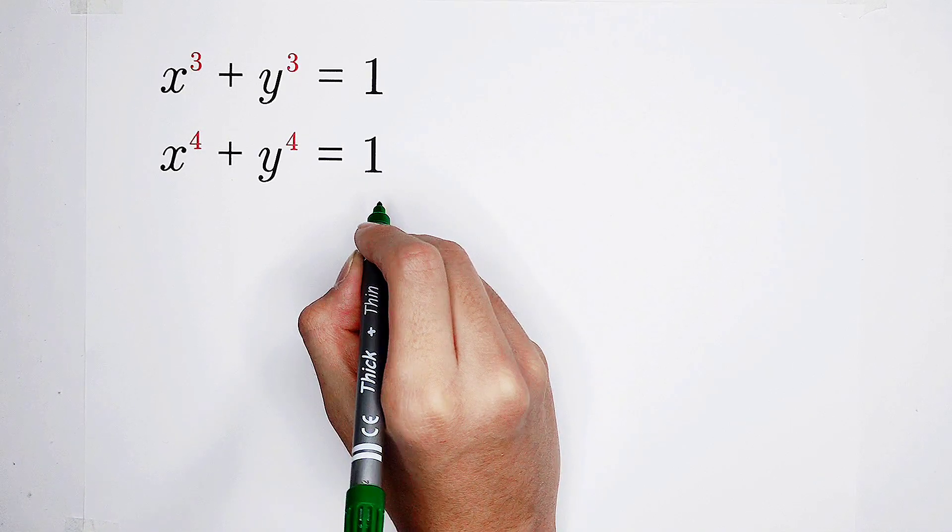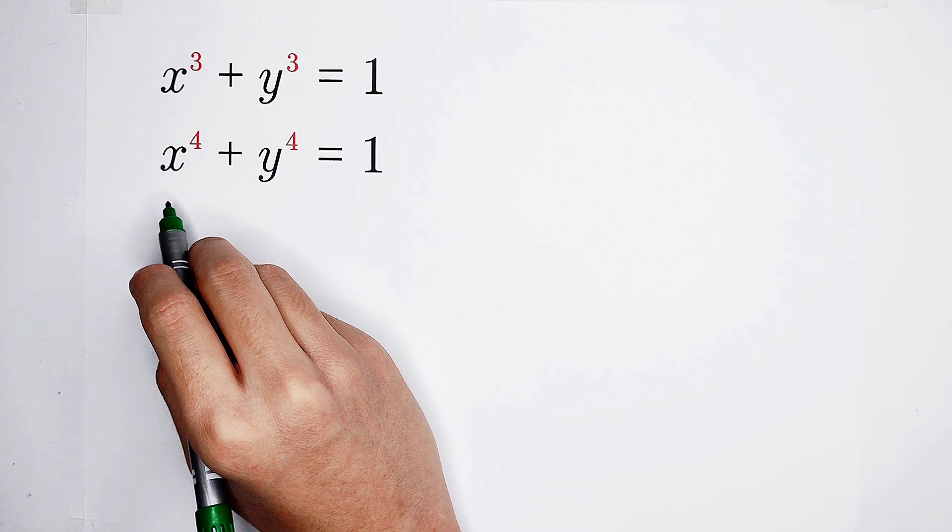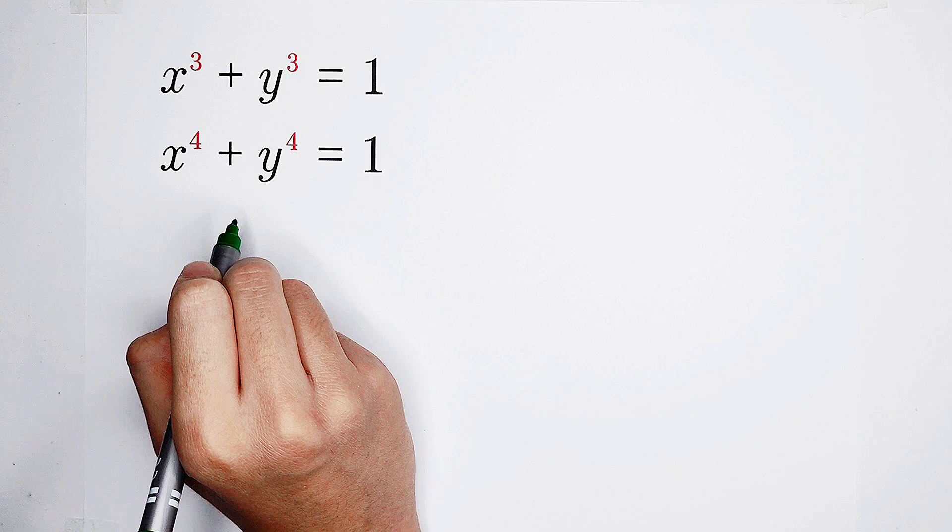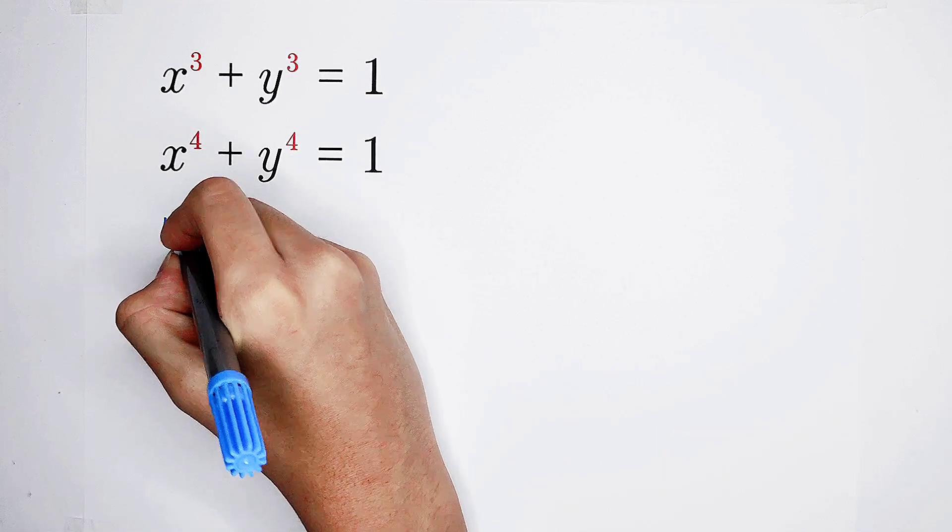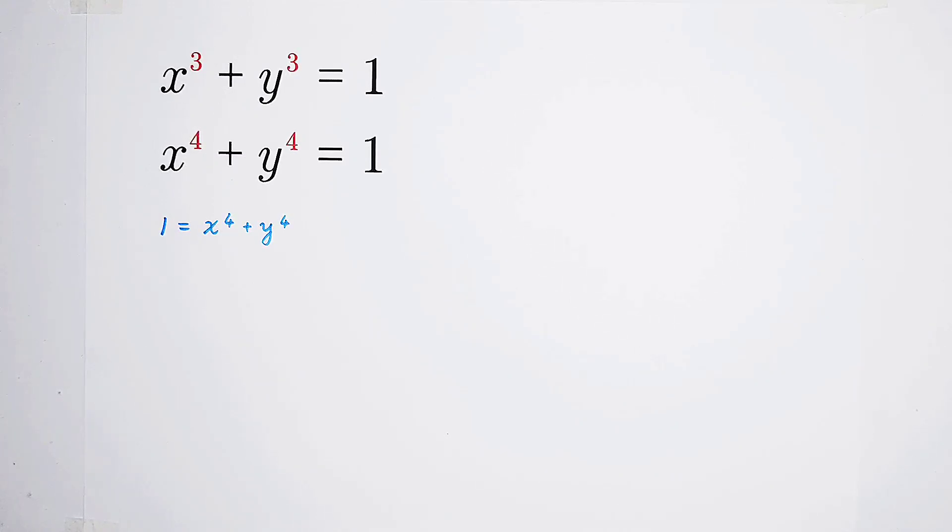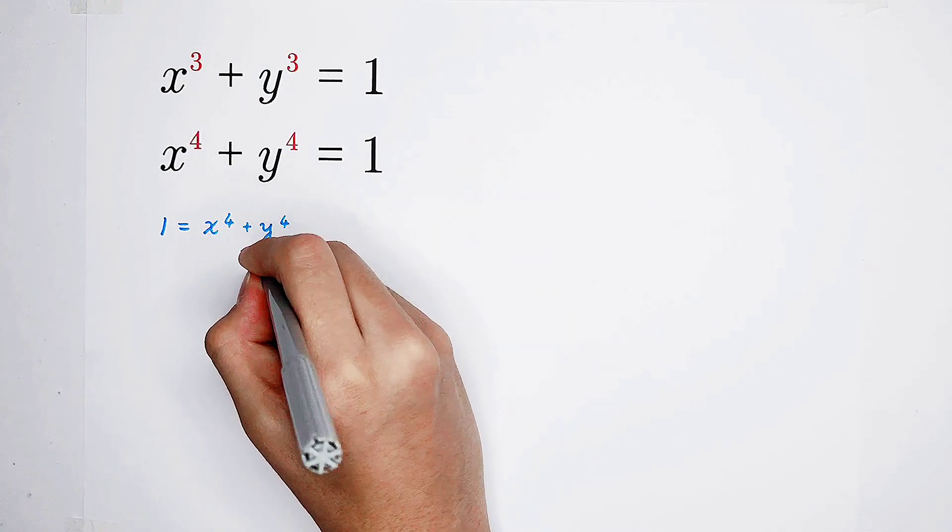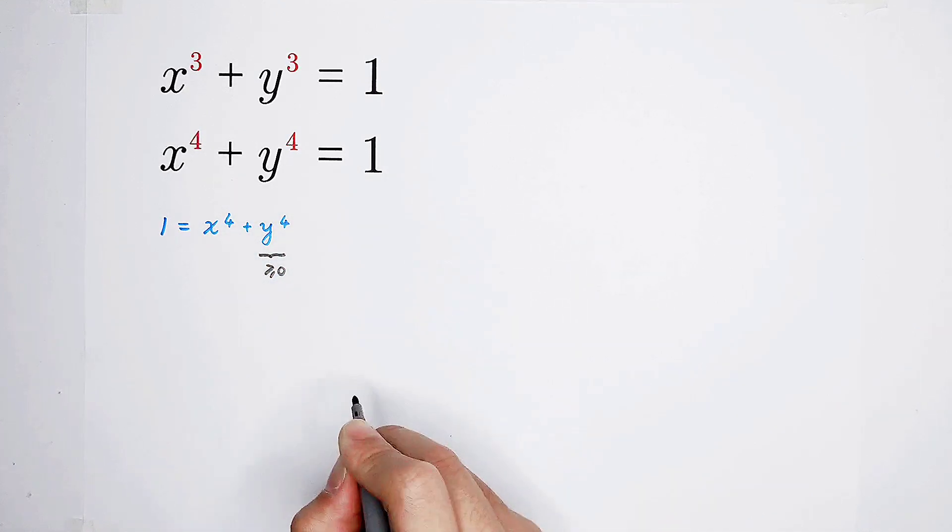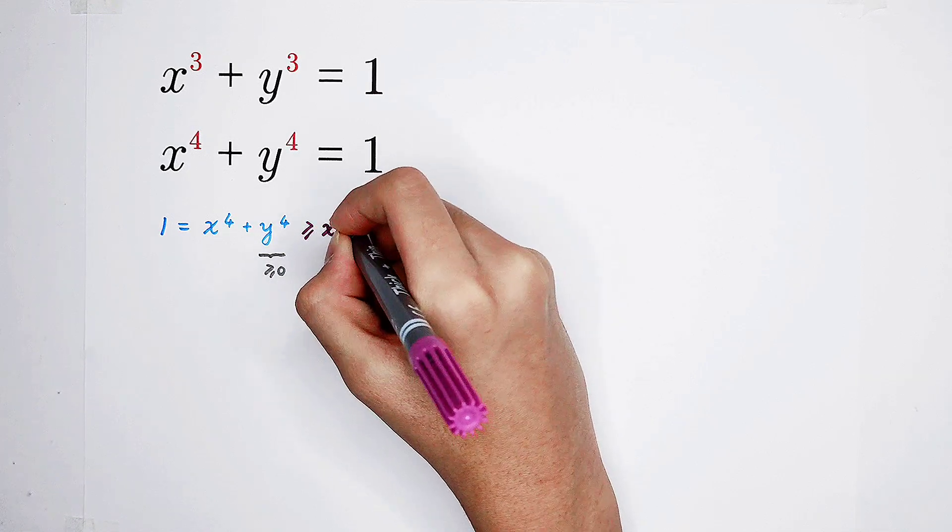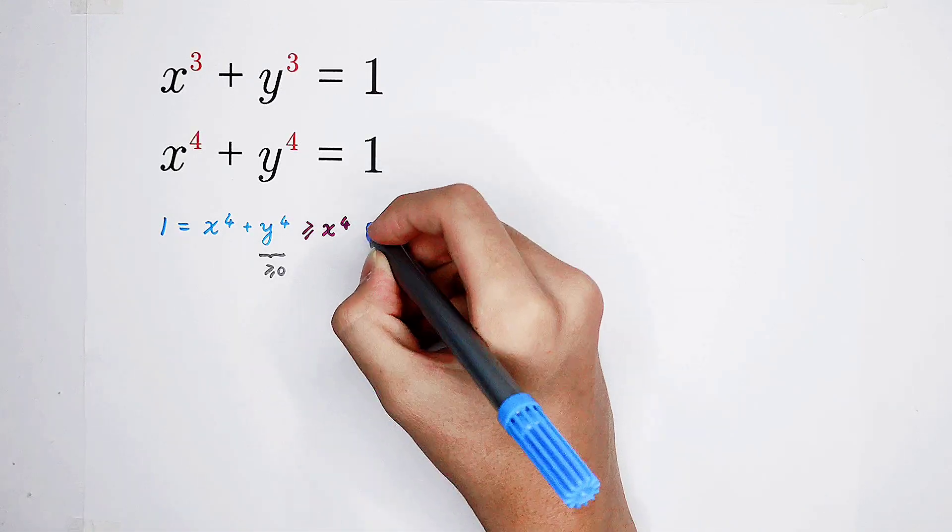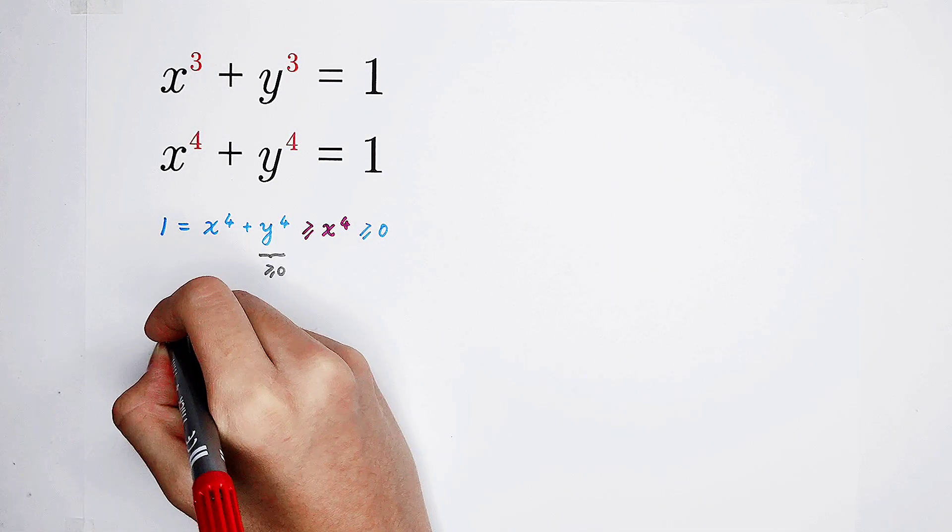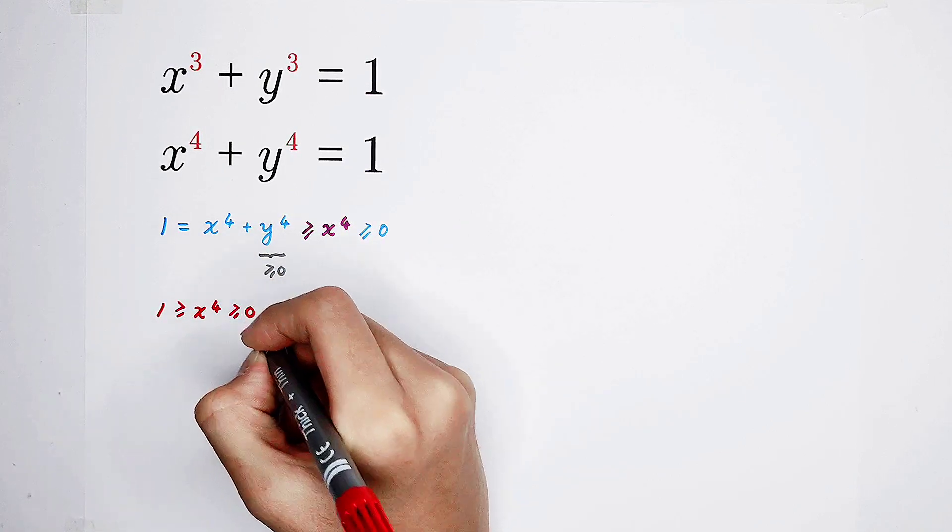Now, what I'm going to do is find out the intervals of values of x. Have a look. 1 equals x to the power 4 plus y to the power 4. This is special. Because we know any number to the power 4 is non-negative, y to the power 4 is non-negative. So that means this one is greater or equal to x to the power 4 plus 0, which equals x to the power 4. However, x to the power 4 is non-negative as well, also greater than or equal to 0. So now we get 1 is greater than or equal to x to the power 4, greater than or equal to 0. Very special.